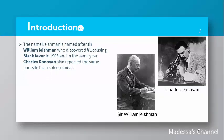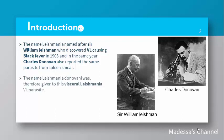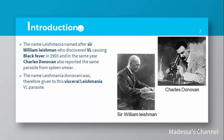The name Leishmania was named after Sir William Leishman, who discovered visceral Leishmania causing black fever in 1903. He took a test from a soldier in 1900 who died of this disease, but the discovery was published in 1903. In the same year, Charles Donovan from Kolkata, Madras (now Chennai), also reported the same parasite from spleen smears. So the name Leishmania donovani was therefore given to this visceral Leishmania parasite.